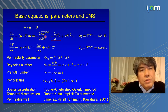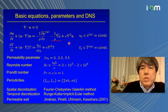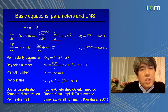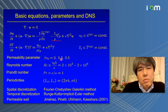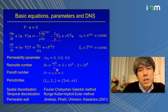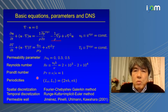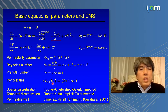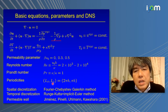The mean pressure gradient and internal uniform heating vary in time so that we maintain a temporally constant bulk mean velocity and bulk mean temperature. The permeability parameter beta is set to an impermeable value, a less permeable value, and a permeable value. Reynolds number is varied over a range, and the Prandtl number is set to unity. The flow is periodic in the wall-parallel direction, and we perform fully resolved direct numerical simulation.